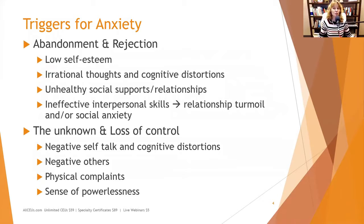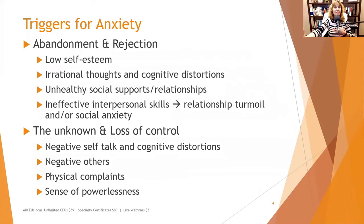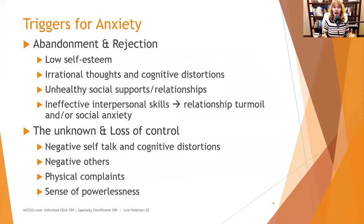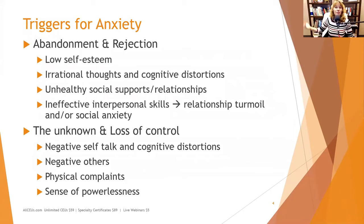Unhealthy social supports and relationships are also a trigger. It takes two to tango — even if your client is relatively healthy, if they're in a dysfunctional relationship where the other person constantly threatens to leave or cheats on them, they can fear abandonment and rejection. Ineffective interpersonal skills can lead to relationship turmoil and social anxiety. If clients can't ask for what they need, set appropriate boundaries, or manage conflict, relationships may end repeatedly, reinforcing fear of abandonment.